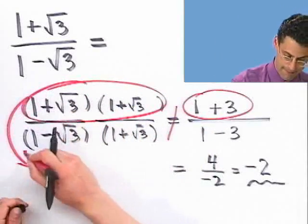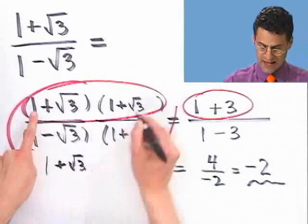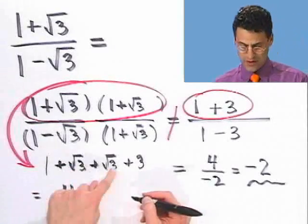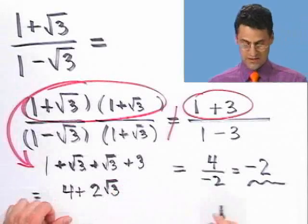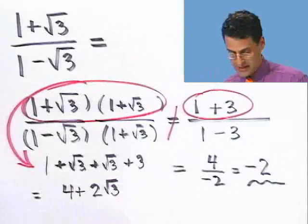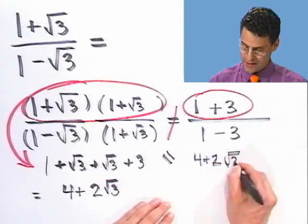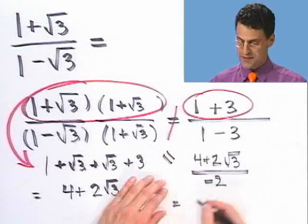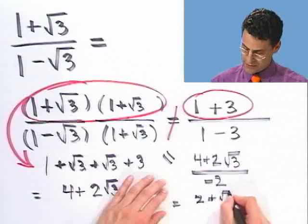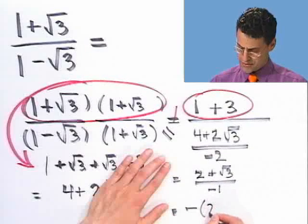If we do it really carefully: one times one is one, then I have a square root of three, then another square root of three, and finally a plus three. So in reality I see one plus three, which is four, and square root of three plus square root of three, which is two square roots of three. The top is actually four plus two square root of three. So the actual answer would be four plus two square root of three, all divided by negative two. Factoring out the common factor of two and canceling, I see two plus square root of three over negative one, which is just negative two plus the square root of three.